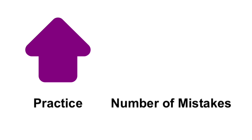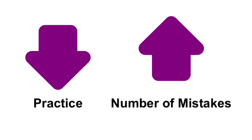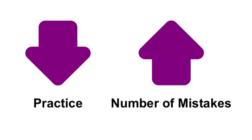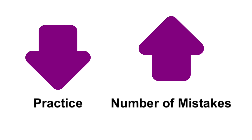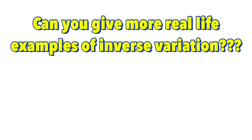Practice and number of mistakes are inversely proportional to each other, which means the more we practice, the fewer mistakes we commit. On the other hand, the less we practice, the more mistakes we make. What could be some other examples of inverse variation that you can think of? Please comment down below with your examples.